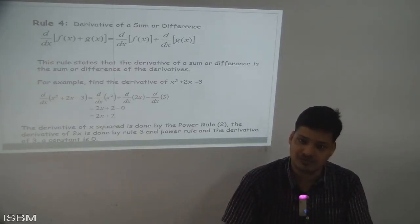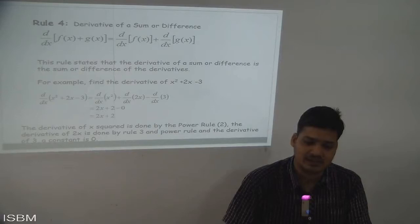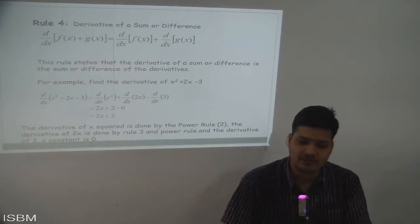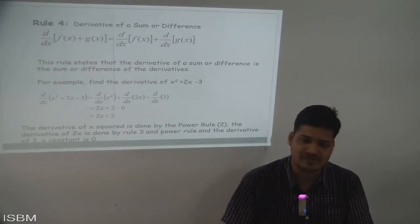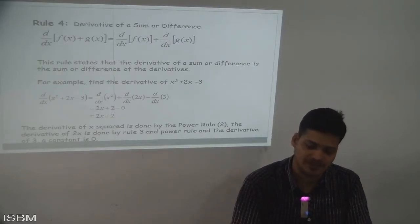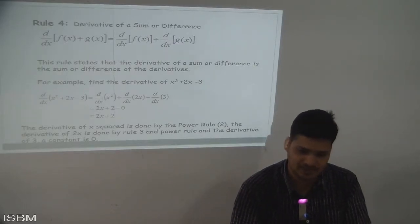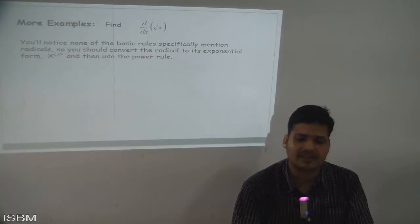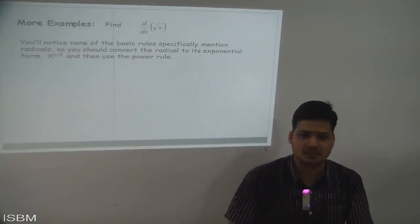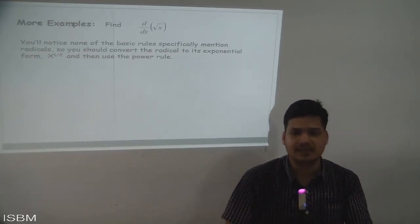The derivative of x² is done by the power rule, the derivative of 2x by rule 3, and the derivative of constant 3 is zero as seen previously. Now for more examples — find d/dx of √x. Root x is nothing but x to the power 1/2.